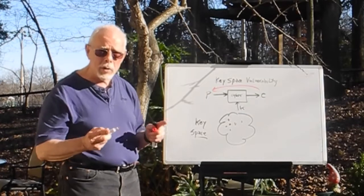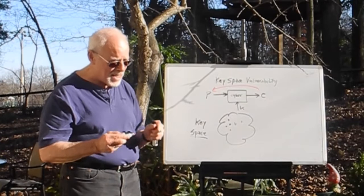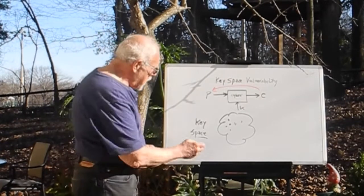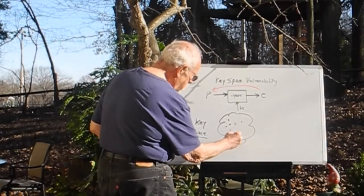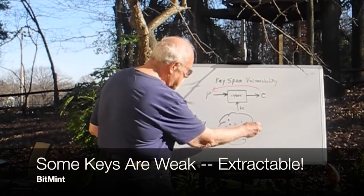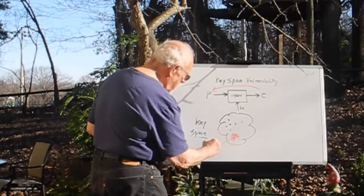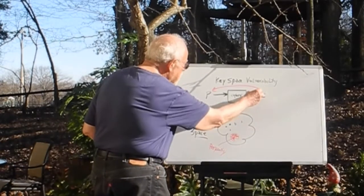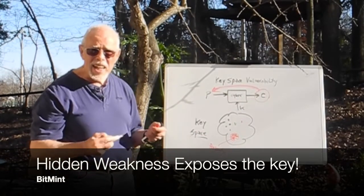However, what is invisible — and that's the fundamental vulnerability of the key space — is that there may be a few keys that, if selected by chance, because we select the key randomly, those particular keys have a particular property for which cracking of the ciphertext is easy.